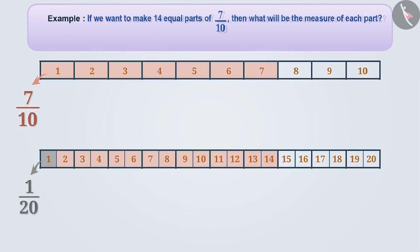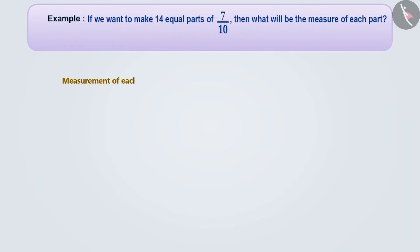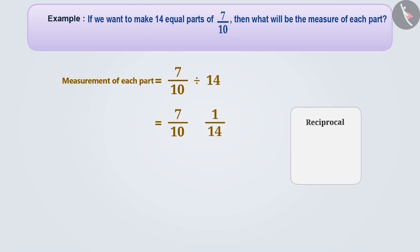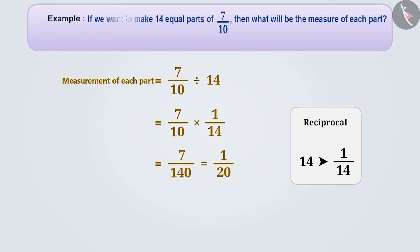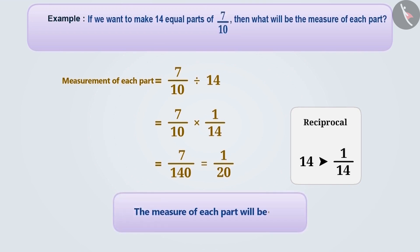Let's solve this mathematically. To find the measurement of each part, we have to divide seven by ten by fourteen. We will keep the first fraction exactly the same and multiply it by the second number's reciprocal. Here the reciprocal of fourteen is one by fourteen. Therefore, if we want to make fourteen parts of seven by ten, the measurement of each will be one by twenty.